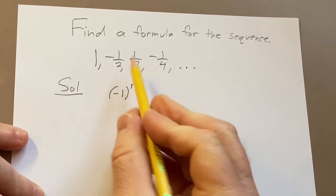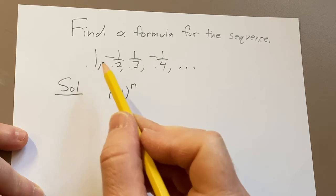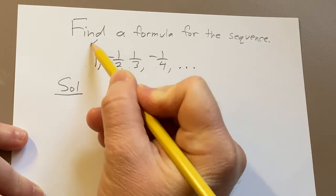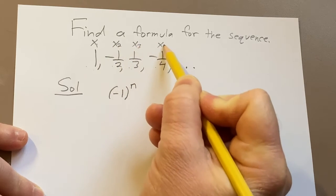The problem with this is that this is a sequence and we're pretending all sequences here start at n equals one. So this here is going to be x1, this is x2, this is x3, this is x4, etc.